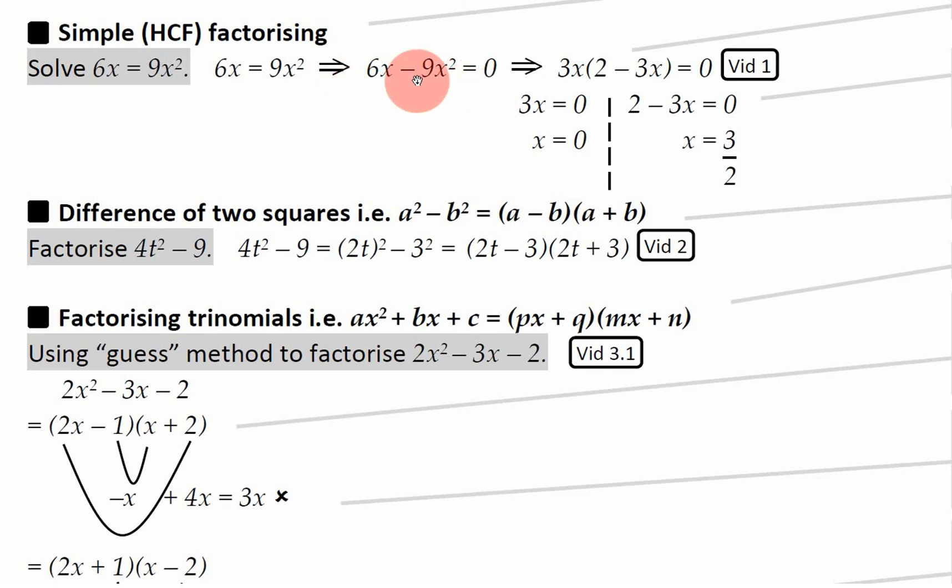The second stage is to actually use highest common factor factorizing. So I want to find out what's the highest common factor of 6x and minus 9x squared. So between these two numbers, the 6 and the minus 9, the highest common factor is 3. So I put 3 on one side. And what's the highest common factor between x and x squared? Well that's just x. So that also goes over there next to the 3. So the highest common factor of 6x and minus 9x squared is 3x.